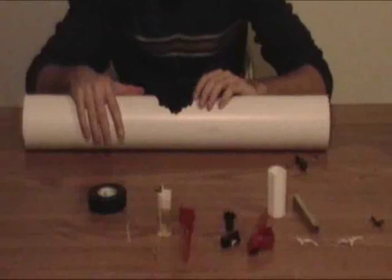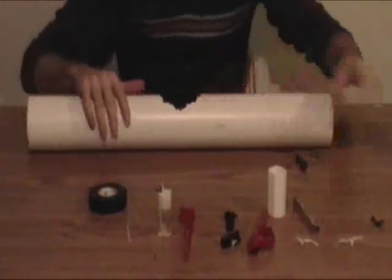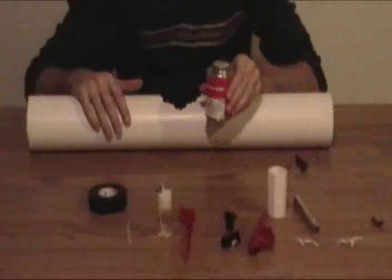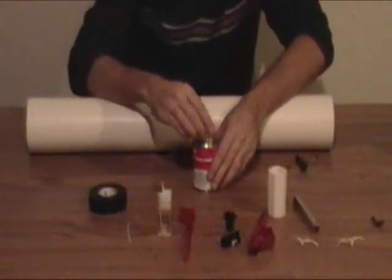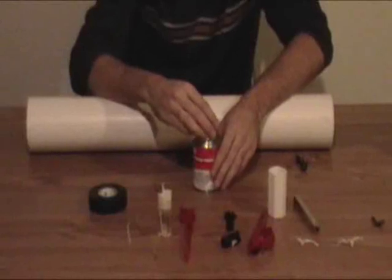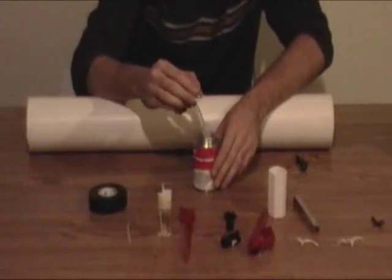Now, once we have it taped down like that, we're going to take some of the PVC glue and go ahead and seal the area around the tape so that it has an extra tight seal.